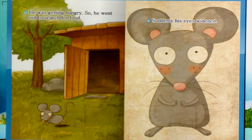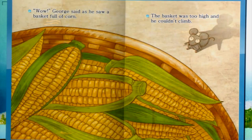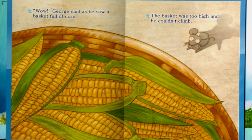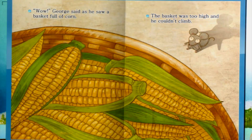그때 suddenly, 갑자기 his eyes widened. 우리 George의 눈이 번쩍하고 커졌어요. Widened, 눈이 커졌대요. 뭔가 찾았나 봐. George said, 'Wow!' as he saw a basket full of corn. George가 와우라고 말했대요. 왜냐하면 basket, 바구니를 봤는데, 지금 옥수수가 가득, full of corn. 바로 옥수수로 가득 담긴 basket, 바구니를 봤기 때문이에요.